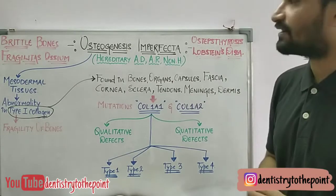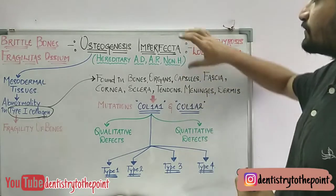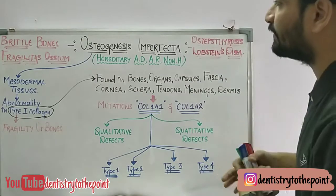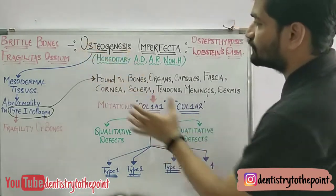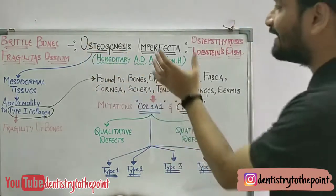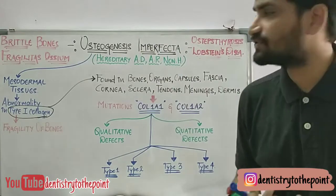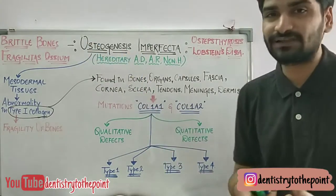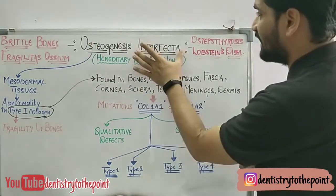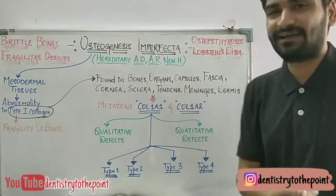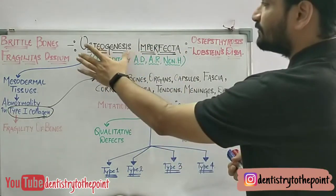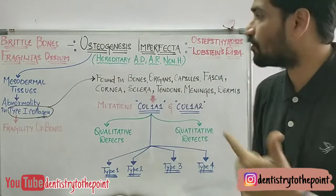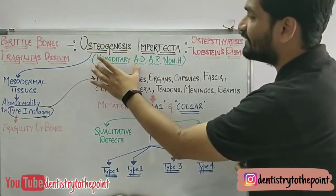What does the word 'osteogenesis imperfecta' mean? Osteogenesis means a process of bone formation, and imperfecta means it is imperfect. So there is some defect in the process of formation of bone. It is a hereditary condition —